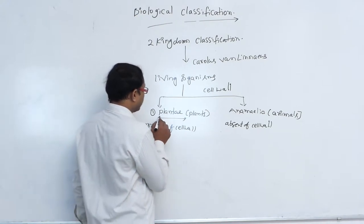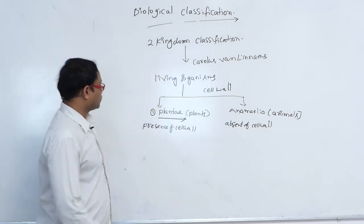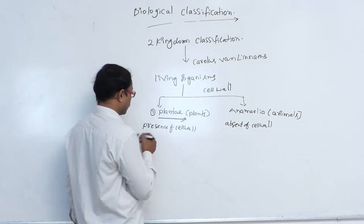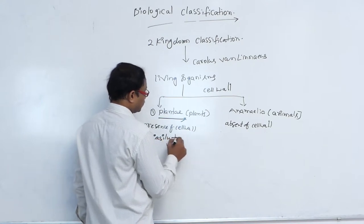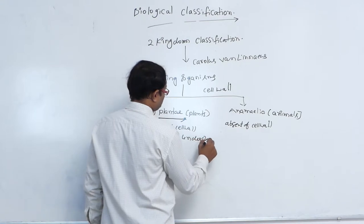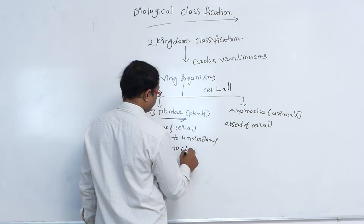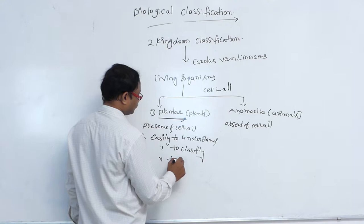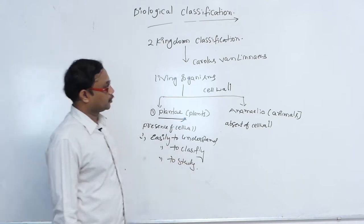In this classification, he did not differentiate other characters — only he took the presence of cell wall for classification of living organisms. That is known as the two kingdom classification. The merits of this system: it is easily understood, it is easy to classify, and it is easy to study.